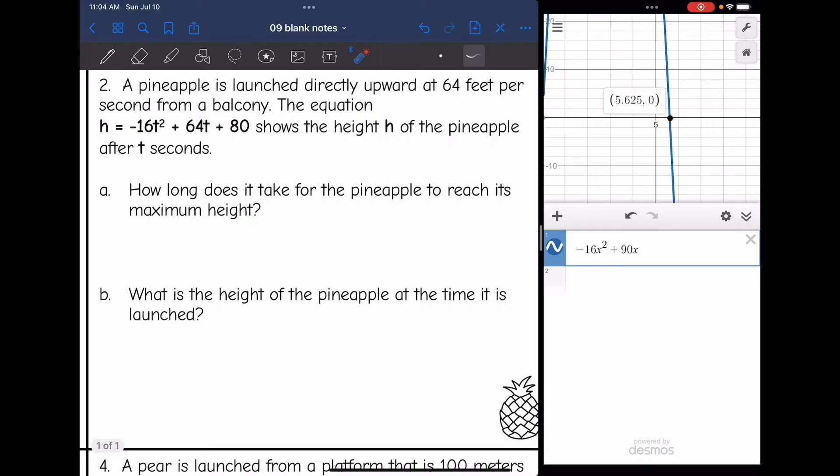A pineapple is launched directly upward at 64 feet per second from a balcony. The equation h = -16t² + 64t + 80 shows the height h of the pineapple after t seconds. How long does it take for the pineapple to reach its maximum height? It's asking for the x value of the vertex this time, since x is time.